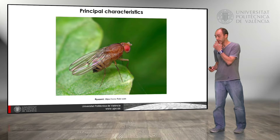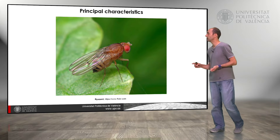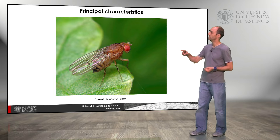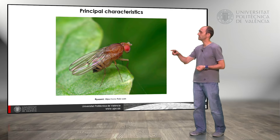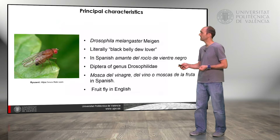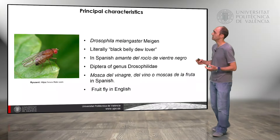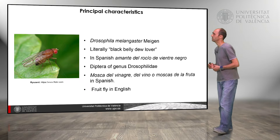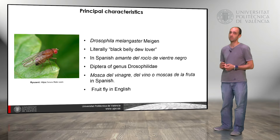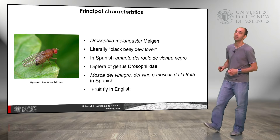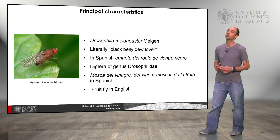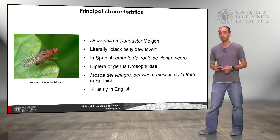Here we have Drosophila. It's an insect, it's a diptera. We have the head, the thorax, the wings, the abdomen, and the legs. Its Latin name is Drosophila melanogaster, which means 'black belly dew lover,' or in Spanish, 'amante del rocío de vientre negro.'